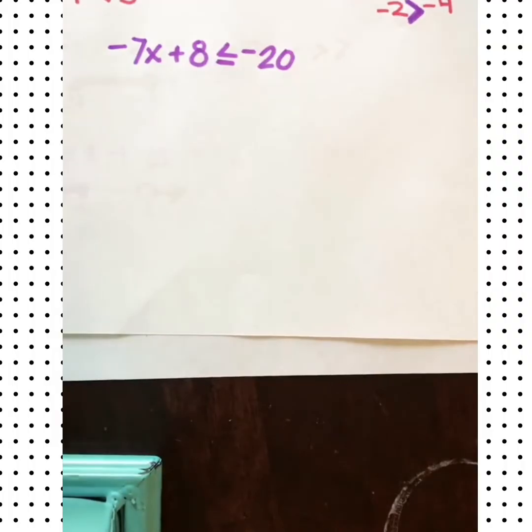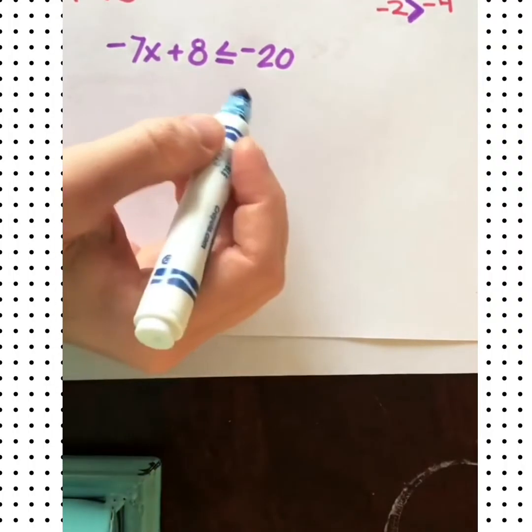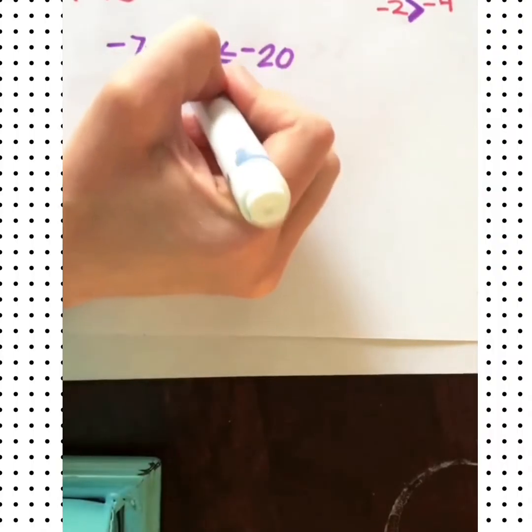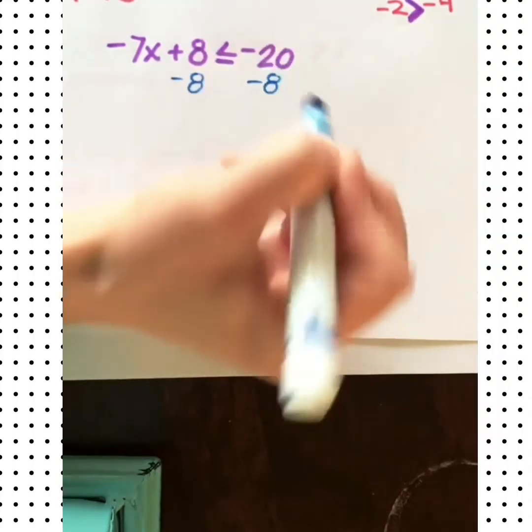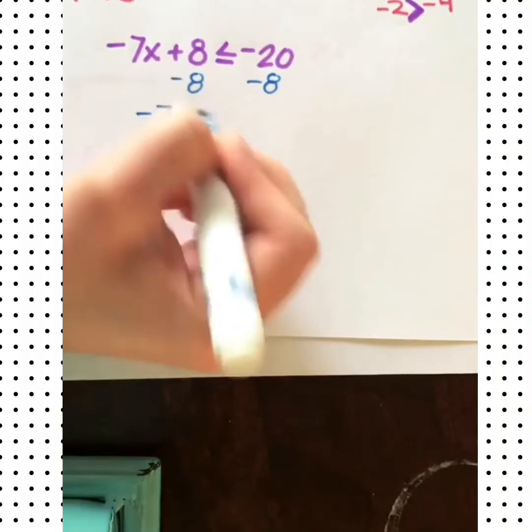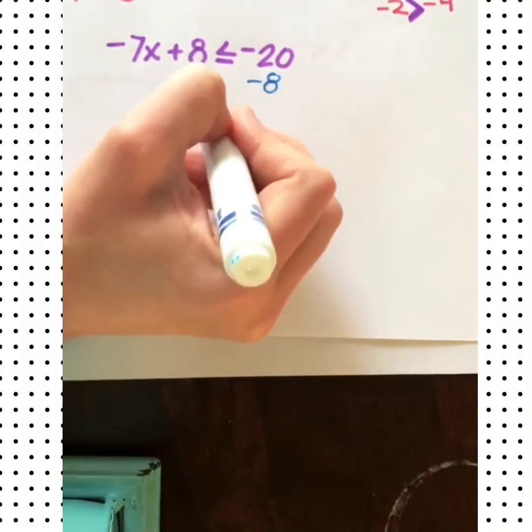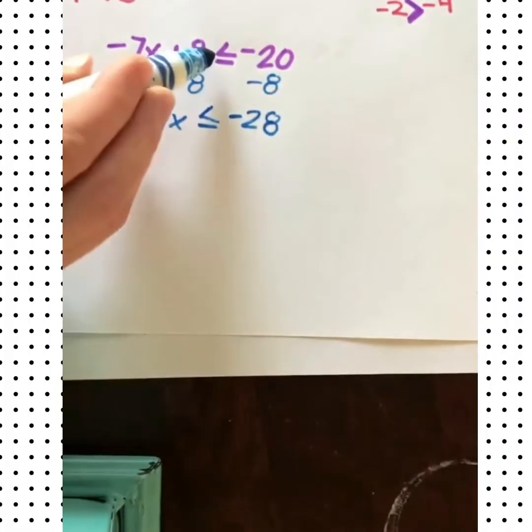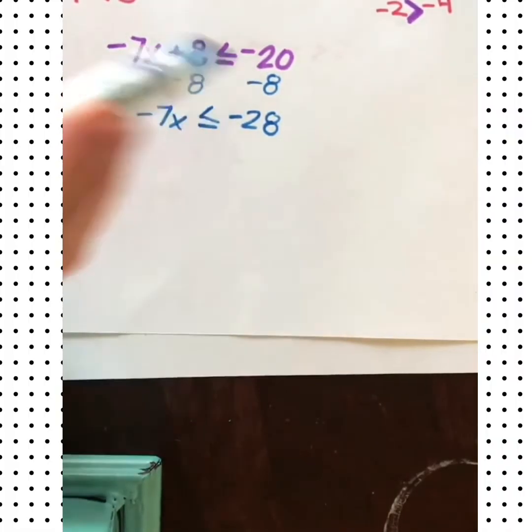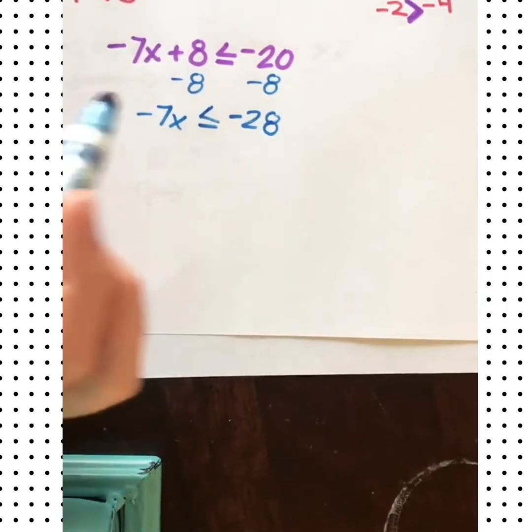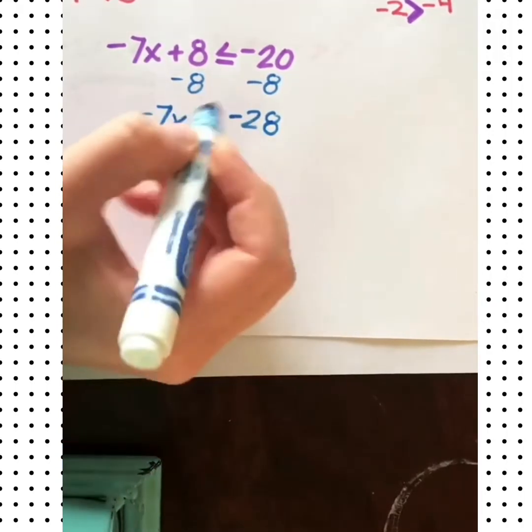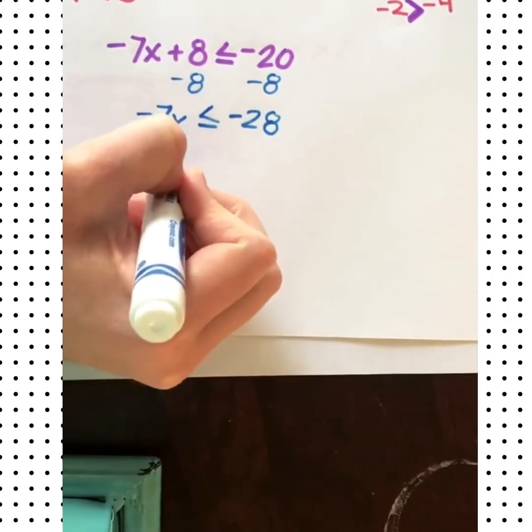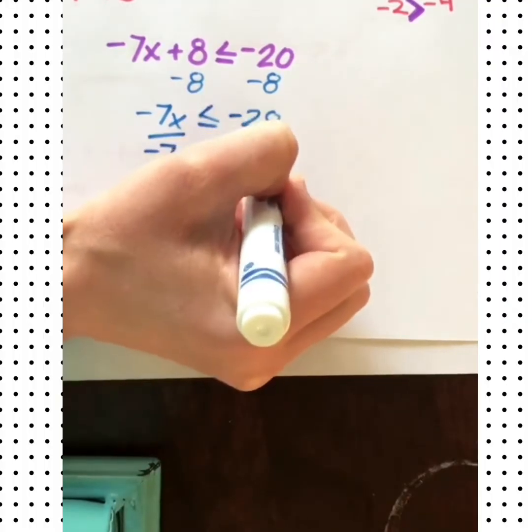Let's solve this inequality and we'll be watching out for any of these tricky situations. So we're going to start off by subtracting 8 from both sides. Negative 7x is less than or equal to negative 28. Now so far, the sign stays the same because all we did was subtract. That doesn't change the sign. Next step, we need to get rid of this negative 7, so we will divide both sides by negative 7.